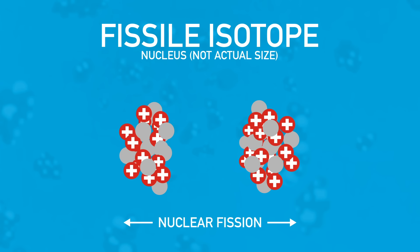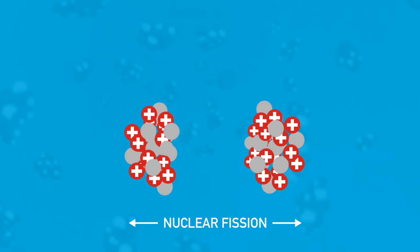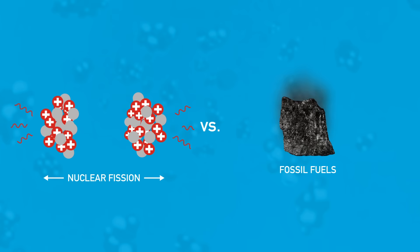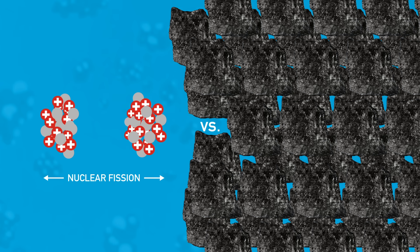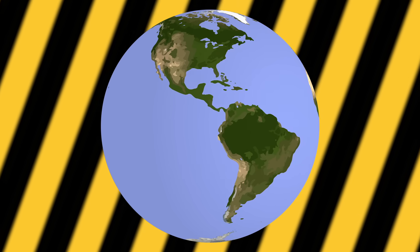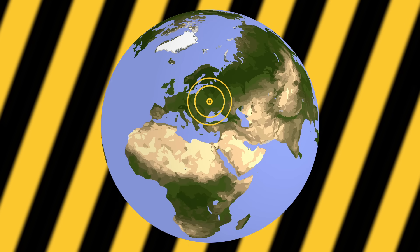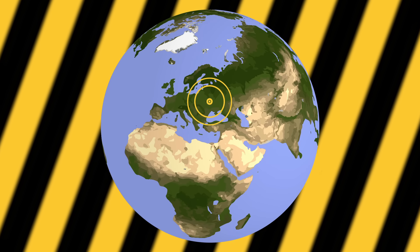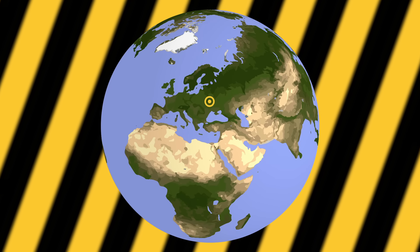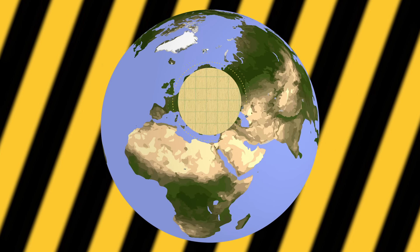So why would we use nuclear energy, and not just fossil fuels? Well, the energy released from one fission reaction is around a million times greater than the energy released when one fossil fuel molecule is burned. Now back to Chernobyl. There were many reasons Chernobyl exploded. To understand them, let's first take a look at how the reactor worked and was controlled.